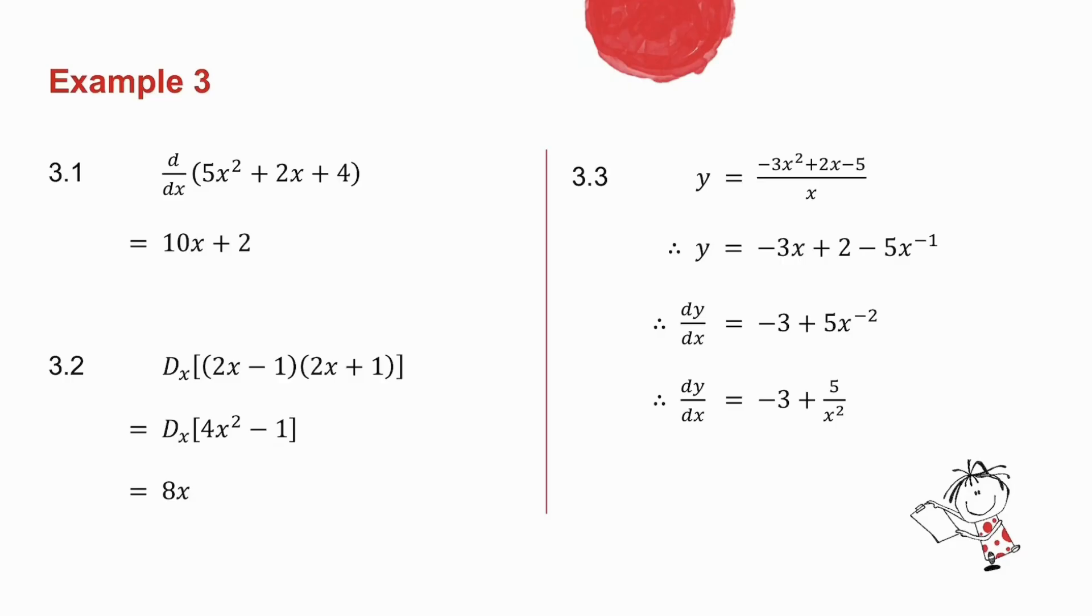3.2, I ask you for the derivative of 2x minus 1 times 2x plus 1. The first thing I do is I multiply my two brackets together, and I get 4x squared minus 1.